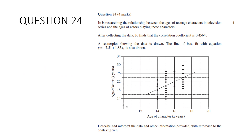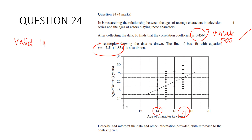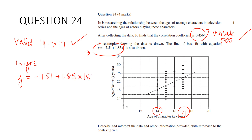First, the correlation coefficient shows a weak positive relationship — that's one mark. Second, the model is valid for ages 14 through to 17; outside that range we call it extrapolation and we shouldn't use the line of best fit — second mark. Third, we could substitute in a character age of, say, 15 years and predict what the actor's age is going to be.